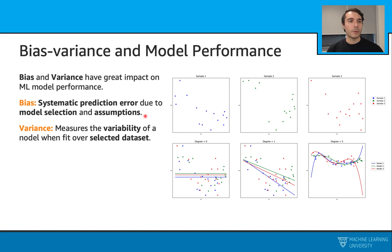As we said before, bias is the systematic prediction error due to the model selection and the assumptions that come with that. And variance is the variability of a model when we fit that model over a selected data set.